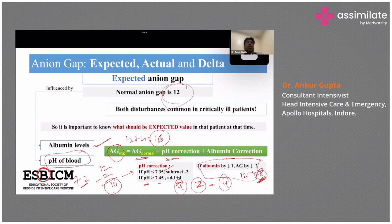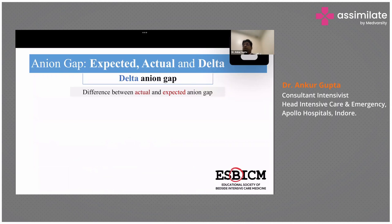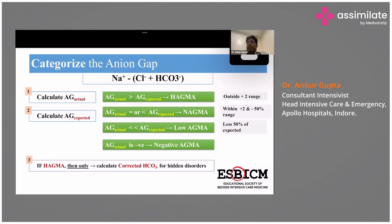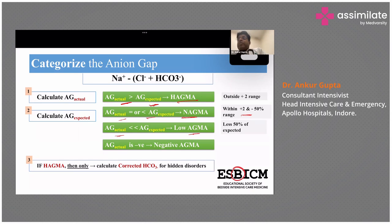These discussions ideally need elaborative one-to-one sessions, but the goal is to give you an idea of what is written in the books and how to approach. Whenever you see an anion gap, always calculate what is expected and compare with that. The delta anion gap is the difference between actual and expected, which determines the category. If actual is much higher than expected: HAGMA. If equal within plus-minus 2: normal anion gap metabolic acidosis. If less than 50% of expected: low anion gap metabolic acidosis. If negative: negative anion gap metabolic acidosis.